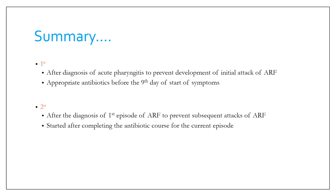Primary prevention follows a diagnosis of acute pharyngitis to prevent the initial attack of acute rheumatic fever by eradicating group A streptococcus. Appropriate antibiotics must be started before the 9th day of symptom onset. Secondary prevention is done after the first episode of acute rheumatic fever to prevent subsequent attacks, and is started after completing the antibiotic course for the current episode.